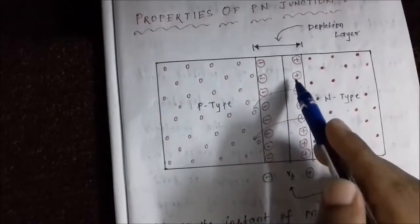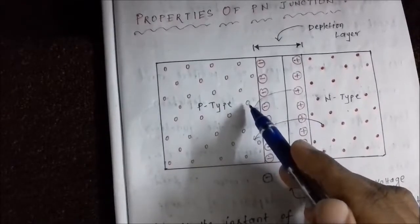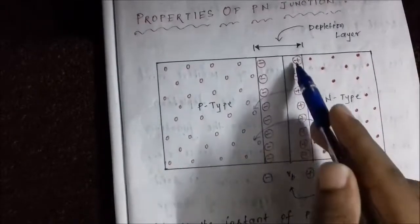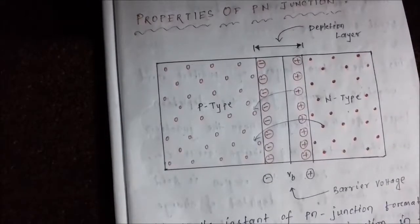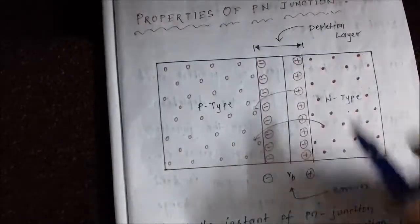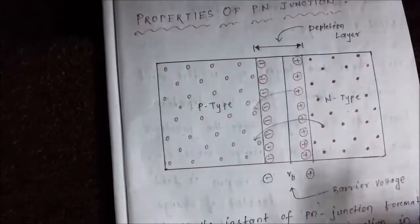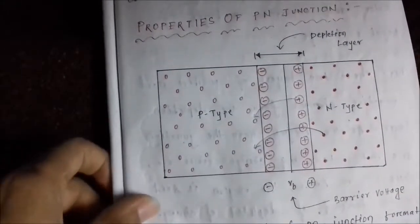The P type material loses its holes due to recombination with electrons, and as the electrons near the junction diffuse to recombine with the holes, the N type region loses its electrons. This entire area gets depleted of any type of charge carriers — both electrons and holes — and that is why this region is called the depletion layer.